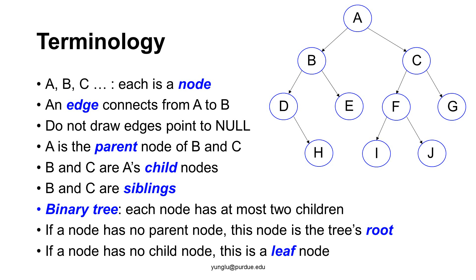Usually, we do not draw the edge if it points to null. Usually, the edges go downwards only. In most cases, tree nodes have no upward pointers. If node A has a pointer to the memory of node B, then node A is the parent of node B.